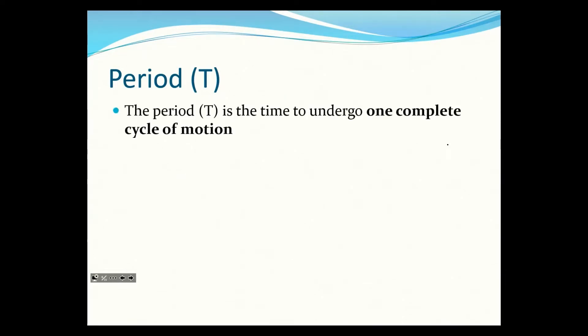There are some terms you need to know. Period has the symbol T. The period is the time to undergo one complete cycle. You might think of the word period from biology — a menstrual period is the time it takes to complete one cycle of motion, one ovulation cycle. That's where the term gets its name.